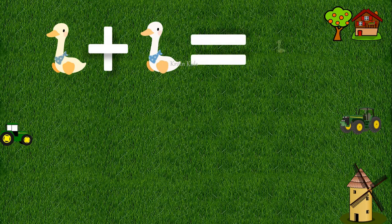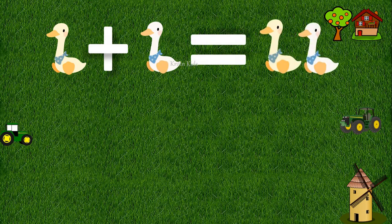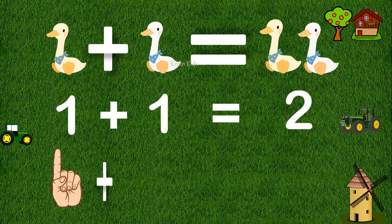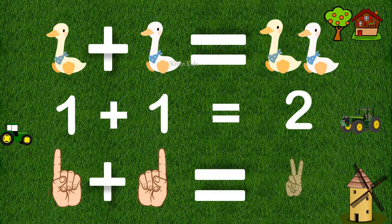We have one duck plus one duck equals two ducks. We can write this equation as one plus one equals two. You can use your fingers also — one finger plus one finger equals two fingers.